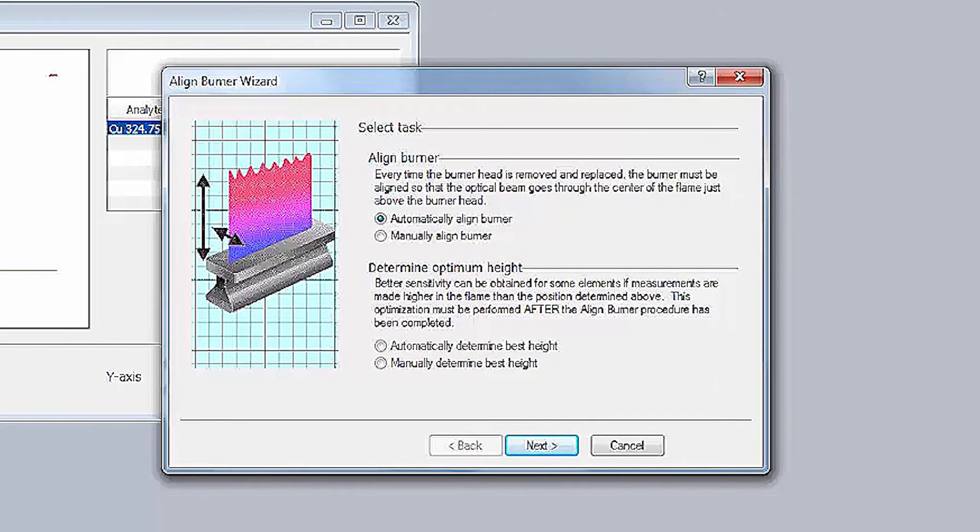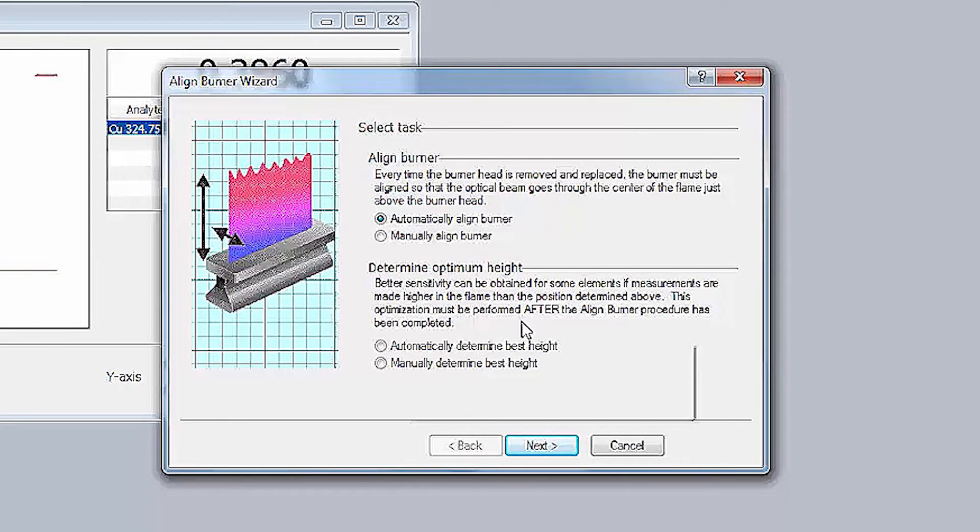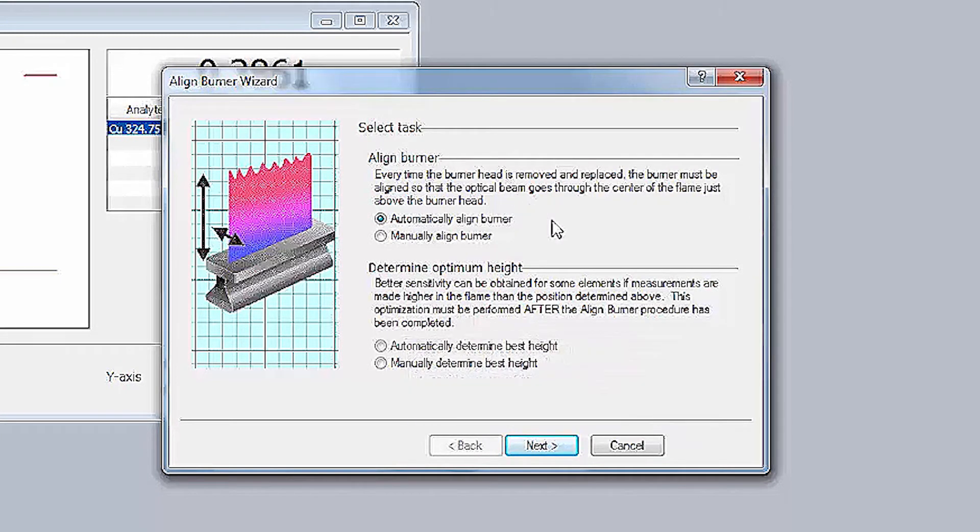The Align Burner wizard and continuous graphics will appear. This wizard will first guide you through the burner alignment and then, if desired, can determine the optimum burner height to view the flame. The Align Burner wizard will guide you through this optimization process.